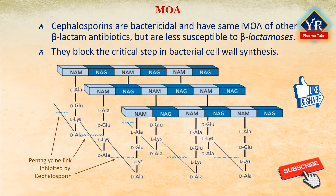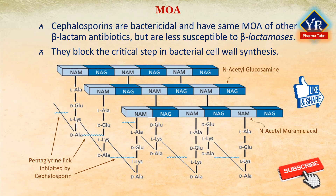The peptidoglycan is composed of glycan chains, which are linear chains — meaning they are linear strands of two alternating amino sugars, N-acetylglucosamine and N-acetylmuramic acid, that are cross-linked by peptide chains.